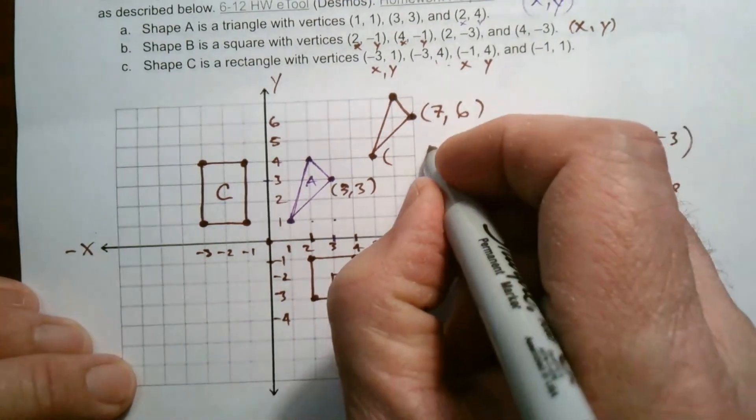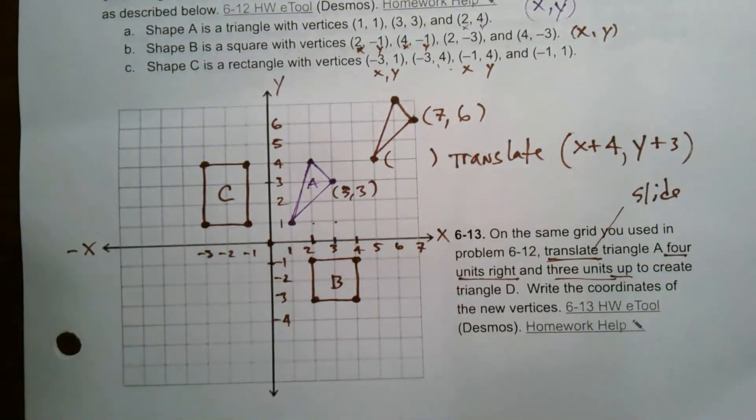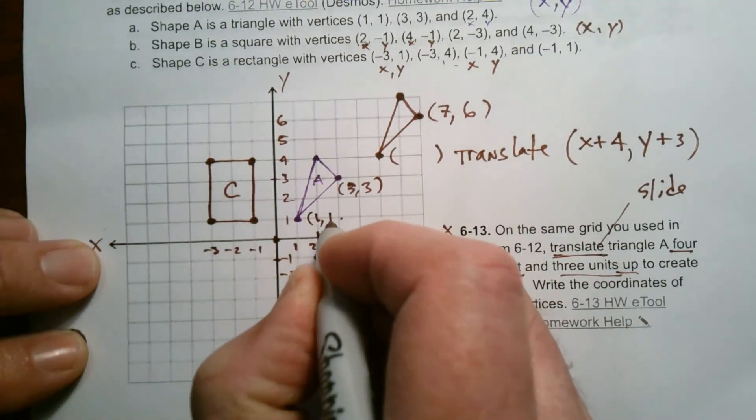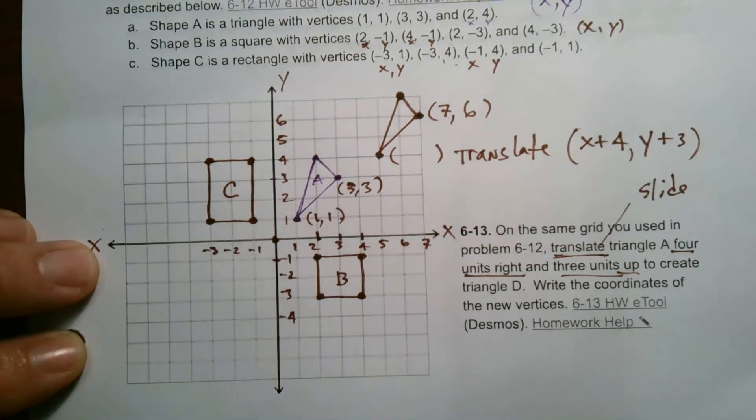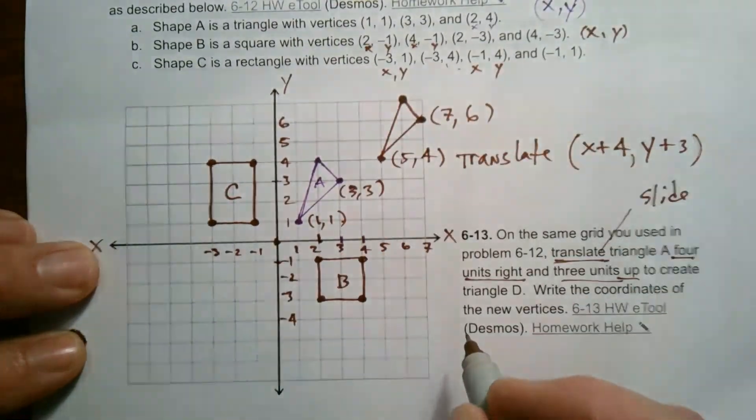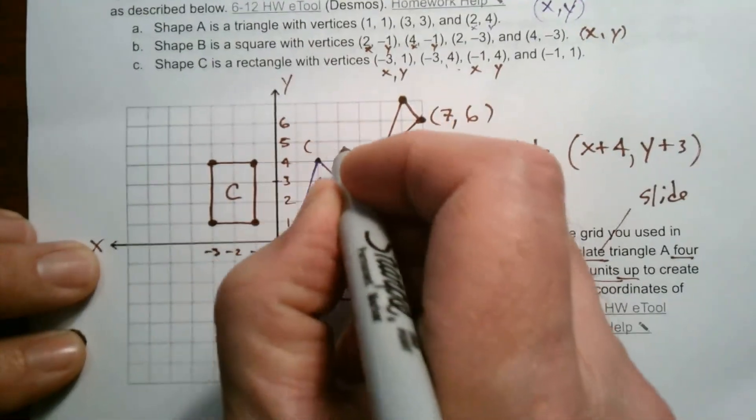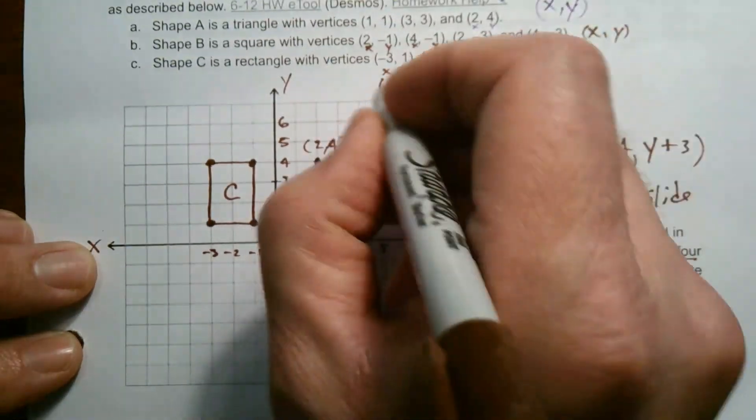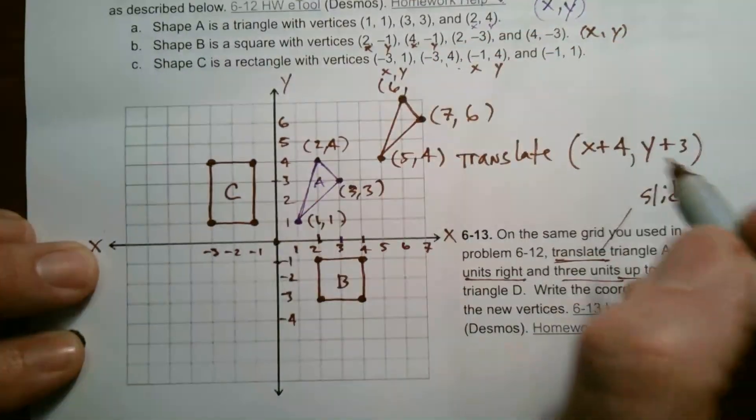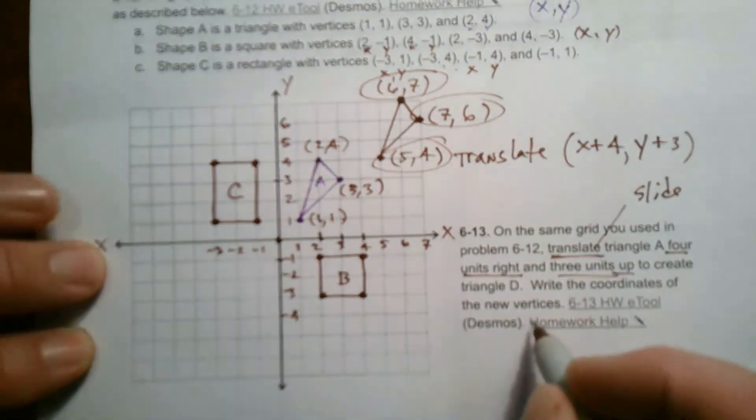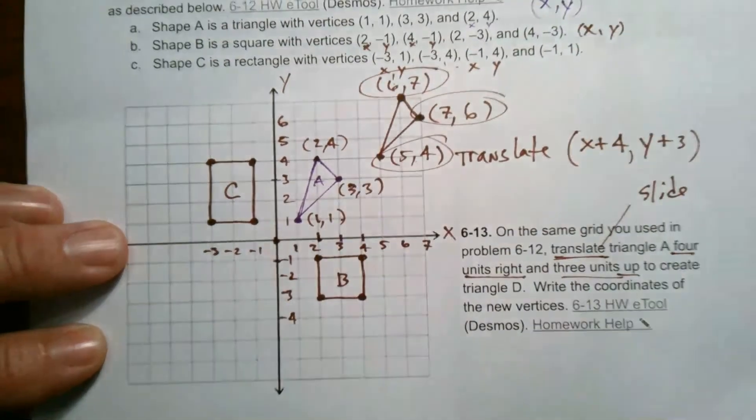So this one here would be, if I'm starting at one, one, it would be at five, four. And if this one, this point was at two, four, I'm at now, add four, I'm at six, add three, I'm at six, seven. So those are the new coordinates. And that's what they want me to write, write the coordinates in the new vertices. I just did. So we're good with that one.